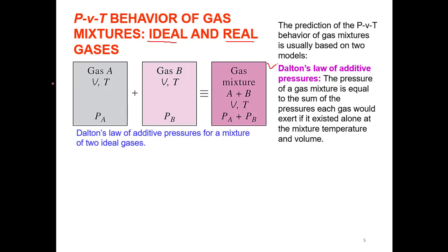For example, if gas A has pressure PA and gas B has pressure PB, the pressure of the gas mixture is PA plus PB. The condition is that each component must exist at the same temperature and volume as the mixture. This is Dalton's law of additive pressure for a mixture of ideal gases.